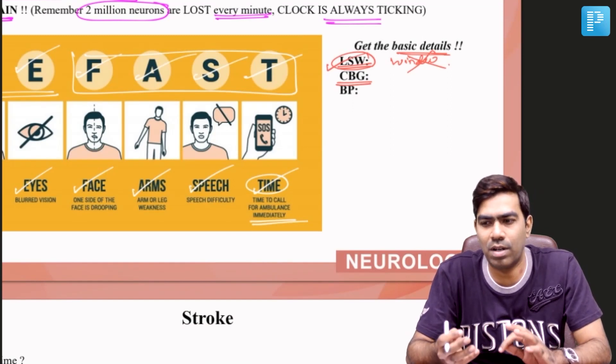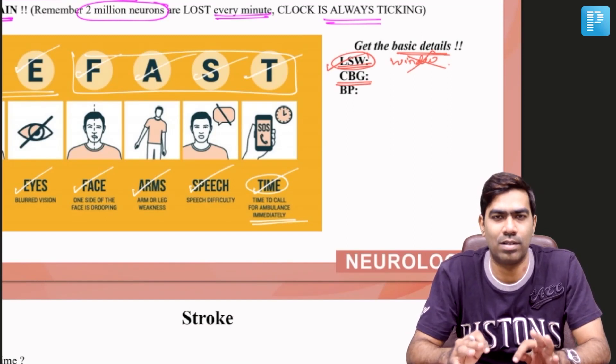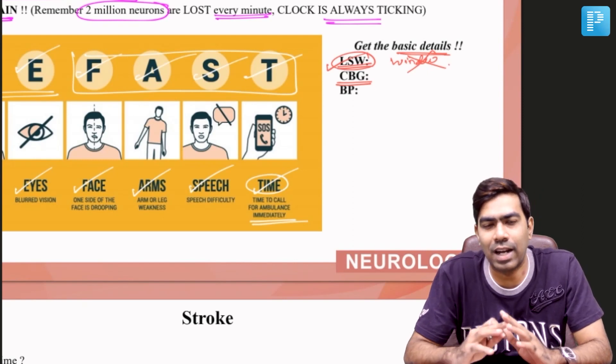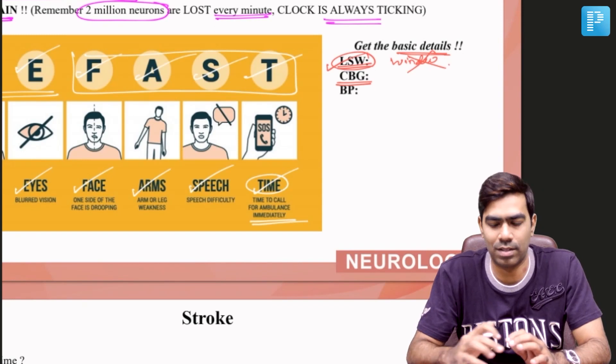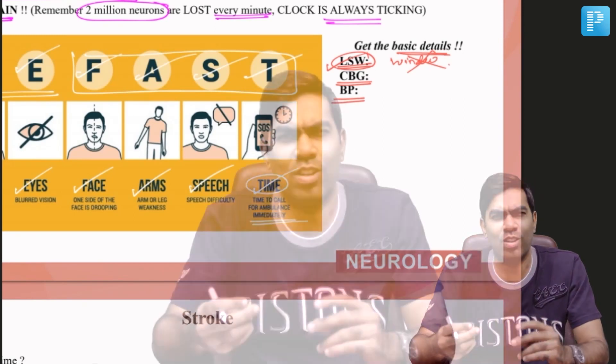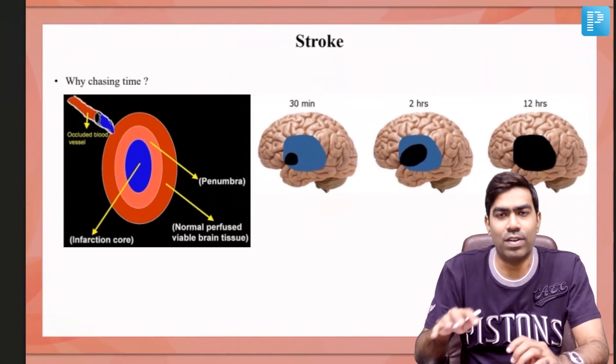You also need to get the CBG — a capillary blood glucose via finger prick — because hypoglycemia causing neuroglycopenia is a great mimicker of ischemic stroke. Get the BP done as well. A BP greater than 185/110 is a contraindication for thrombolysis, and it must be lowered to less than 185/110 immediately, typically by giving labetalol, as per many tertiary care centers.